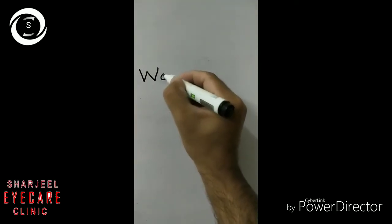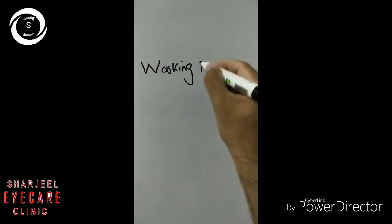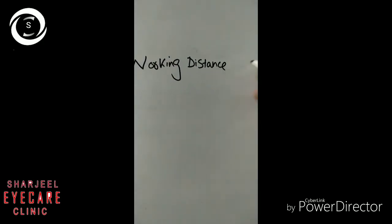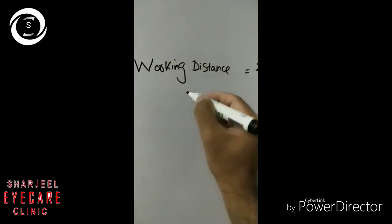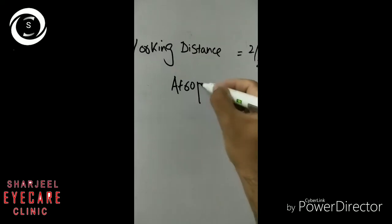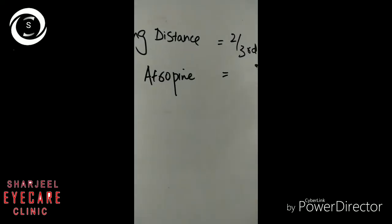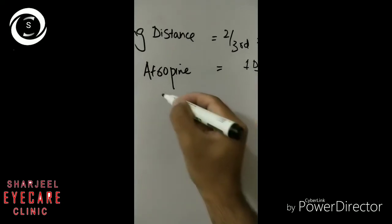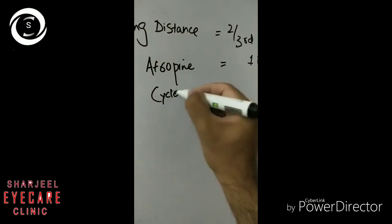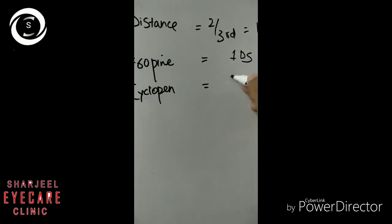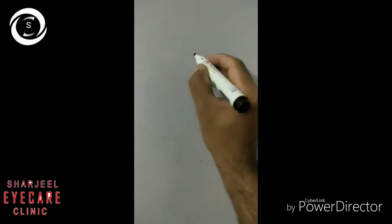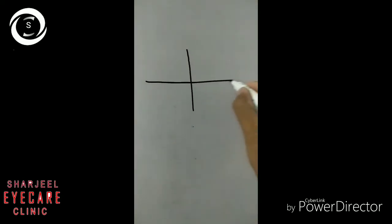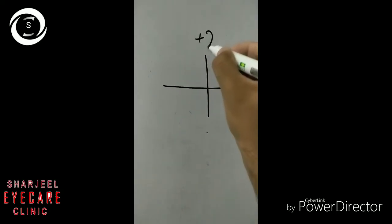Now here we are writing the first example, but before that you should know about the working distance. As in the second video I told you how to measure your working distance — my working distance is two thirds of a meter, which is 1.5 diopter. If you have used atropine as a cycloplegic agent, then you subtract one diopter. And if you have used cyclopentolate as a cycloplegic agent, then 0.5 diopter sphere. So these are the strengths you should know: 1.5, 1, and 0.5.